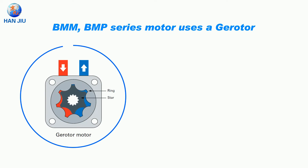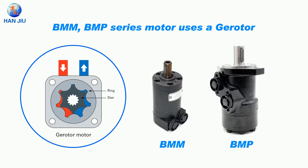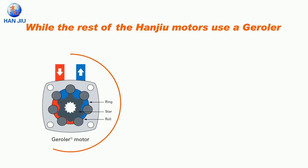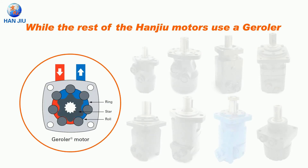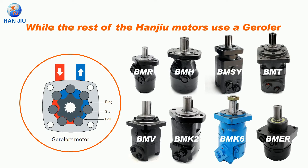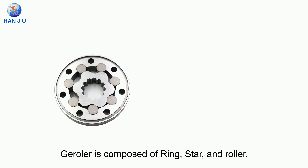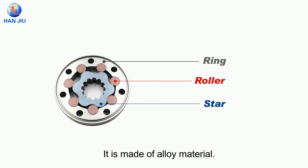The BMM and BMP series motors use a gerator, while the rest of the Hande U motors use a geraler. Taking BMH, BMS, and BMT as examples, the geraler is composed of a ring, star, and roller. It is made of alloy material.